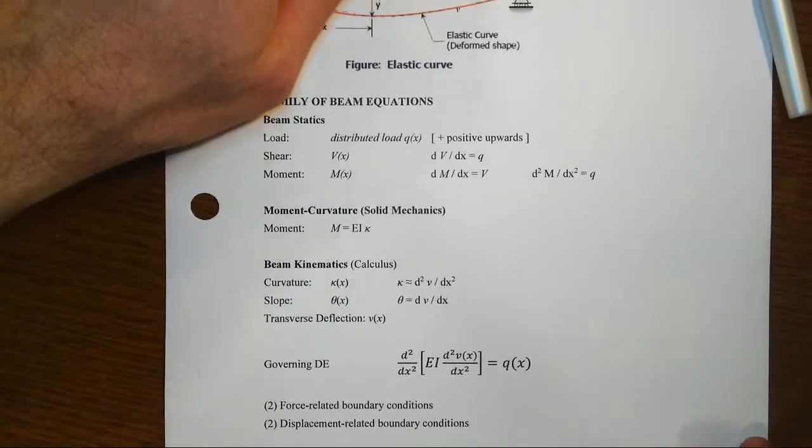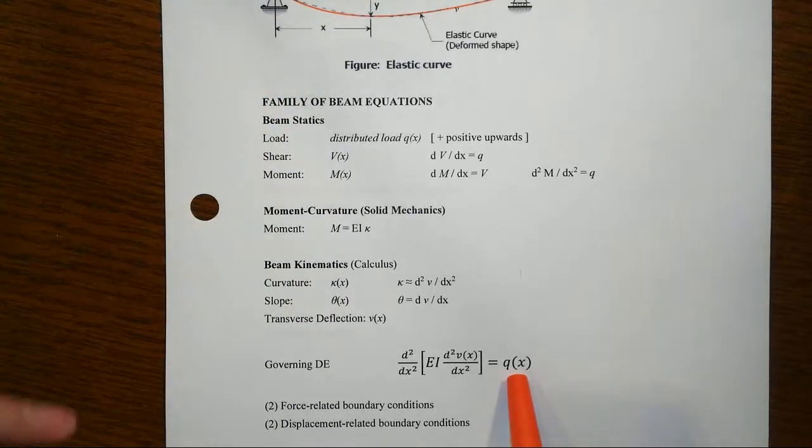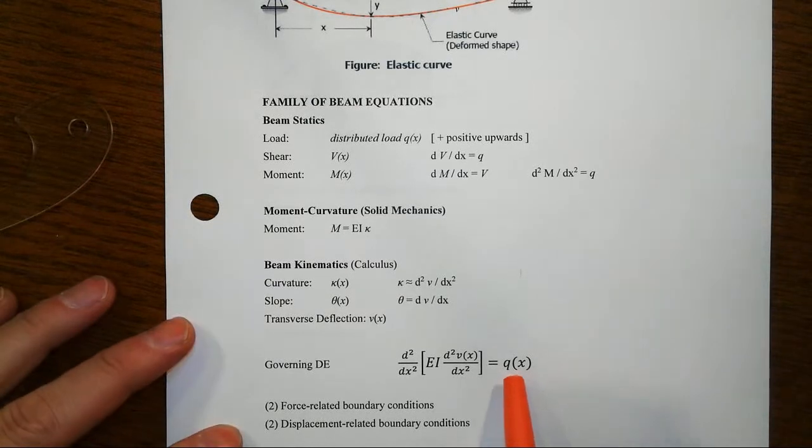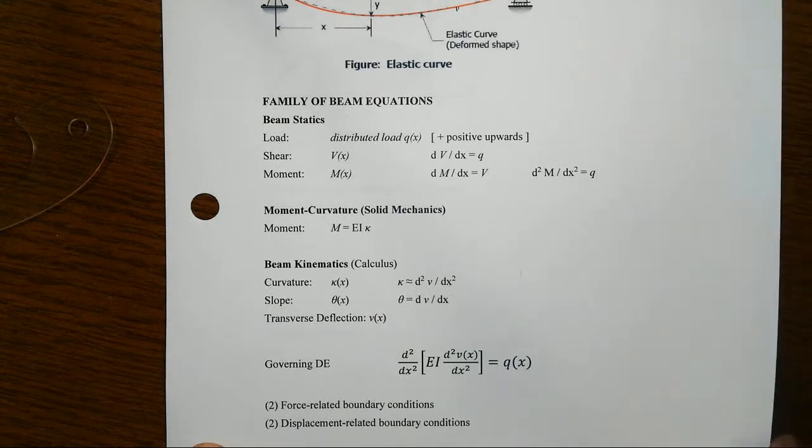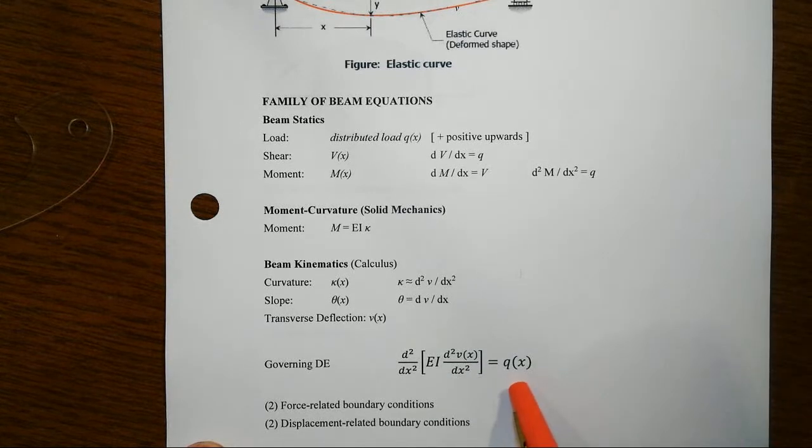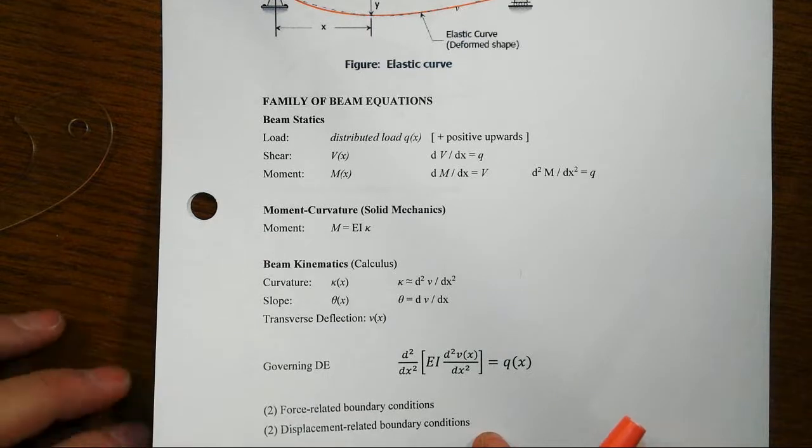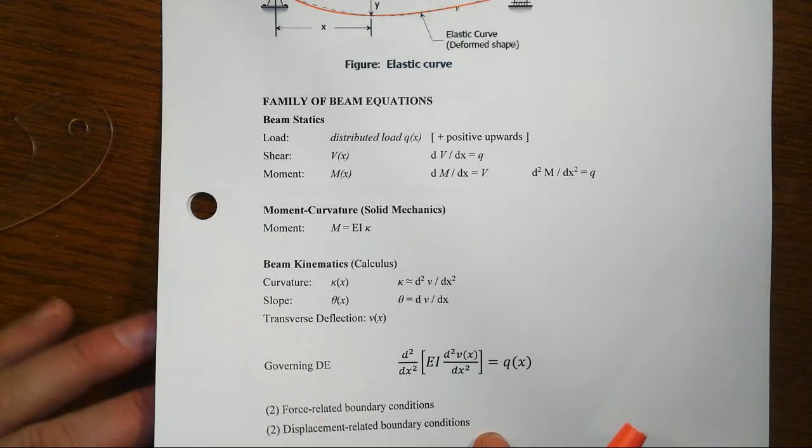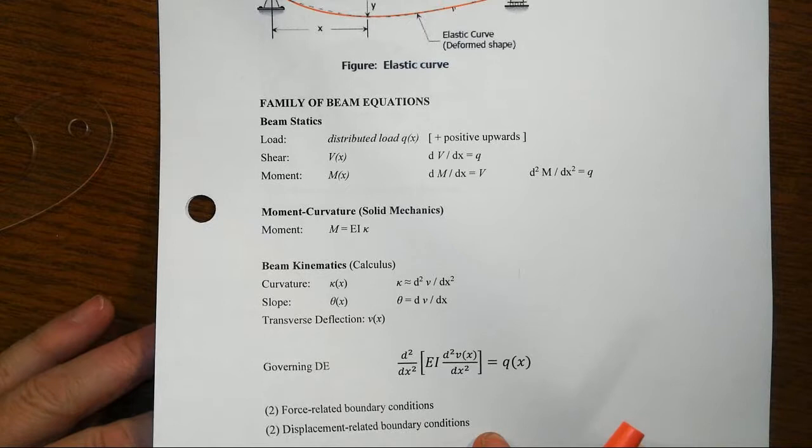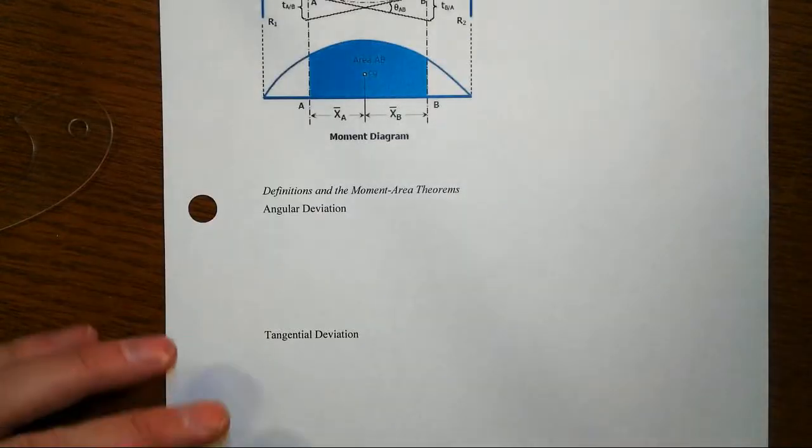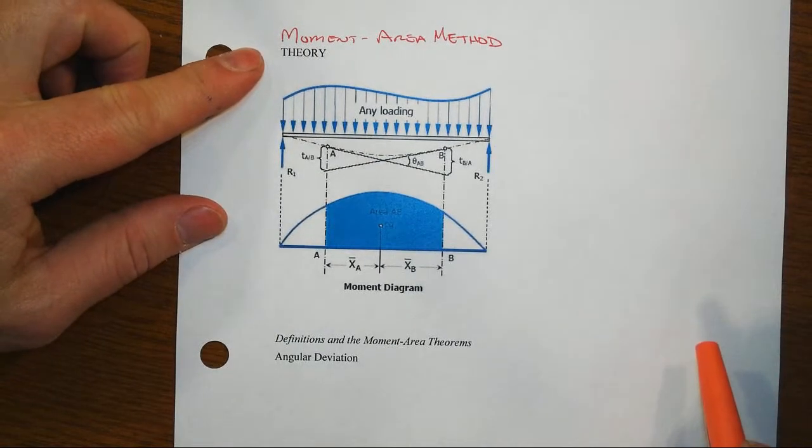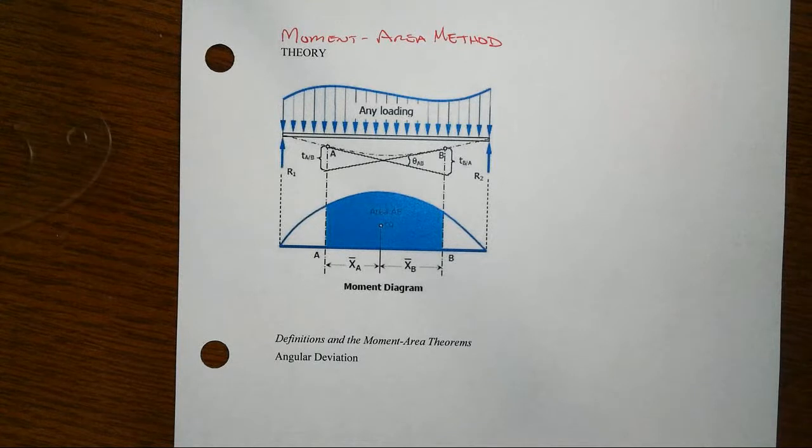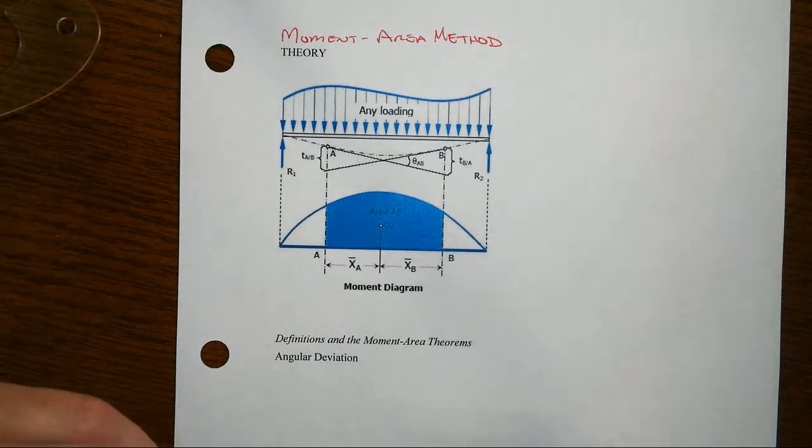Normally speaking, taking whatever the load turns out to be in our model and integrating it somehow four times, solving for all those constants in a straightforward calculus kind of way, is usually not all that convenient and oftentimes not at all simple. So there have been many different techniques over the years to simplify that model and particularly tune it to something convenient for structural mechanics. One of those ideas along the way was the moment area method.